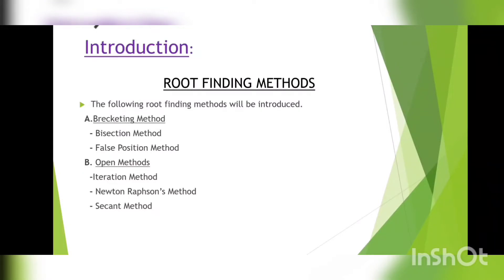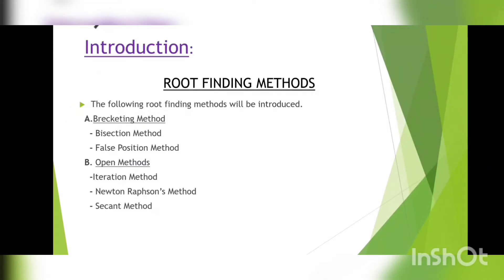Now, let us talk about open methods. Open methods differ from bracketing methods in that open methods require only a single starting value or two starting values that do not necessarily bracket a root. There are three types of open methods: 1. Iteration method, 2. Newton-Raphson method, and 3. Secant method.